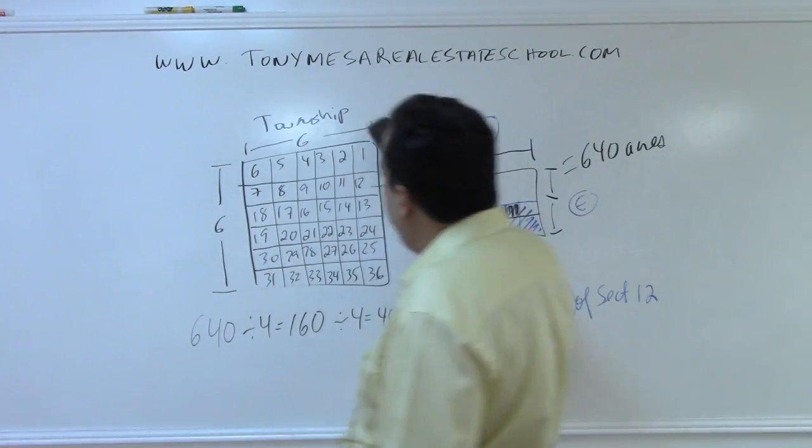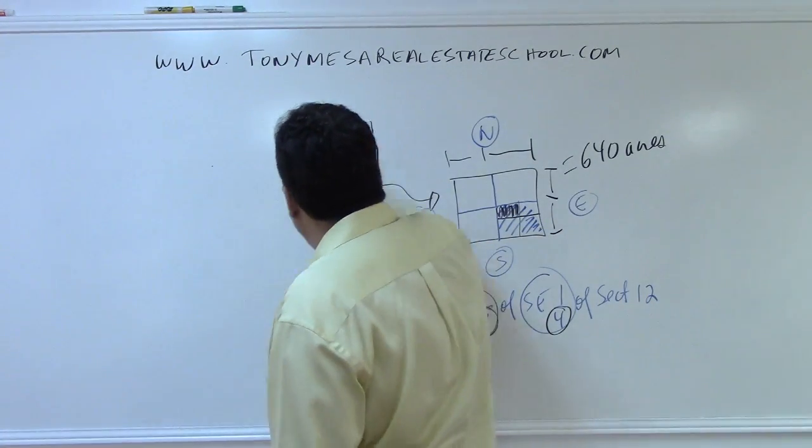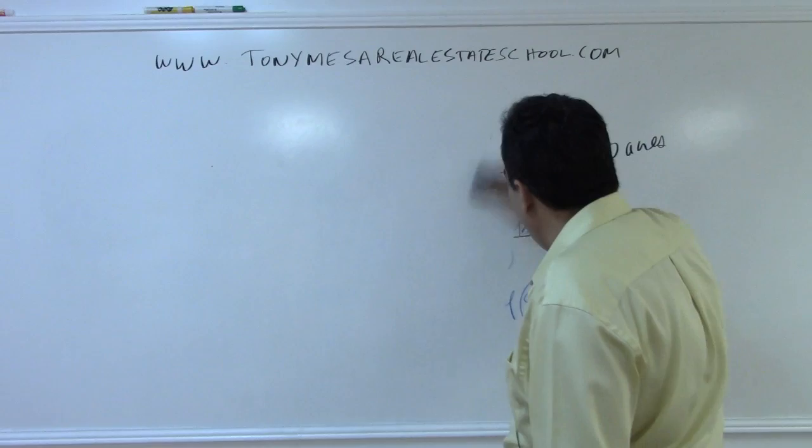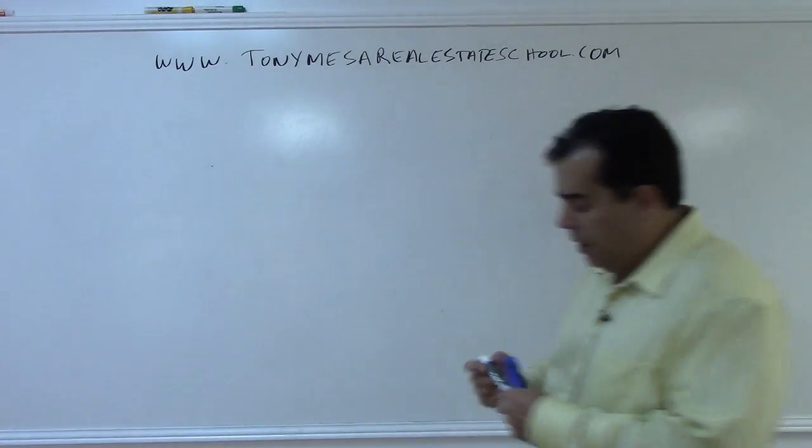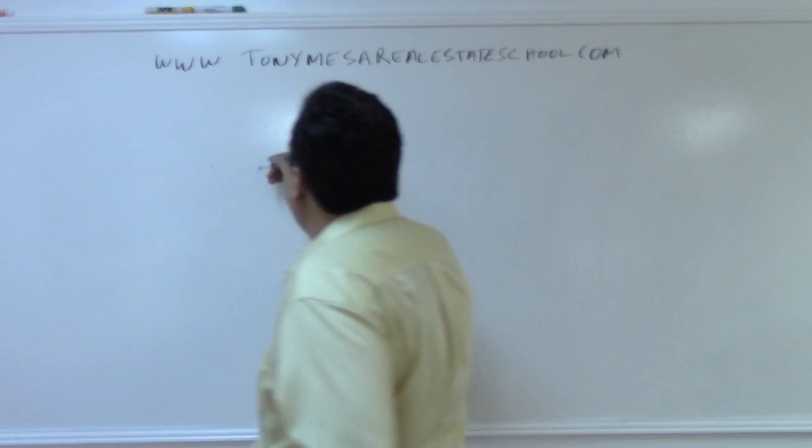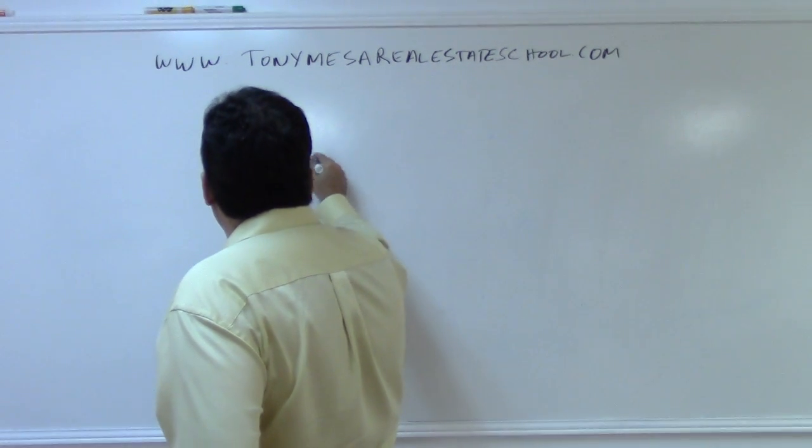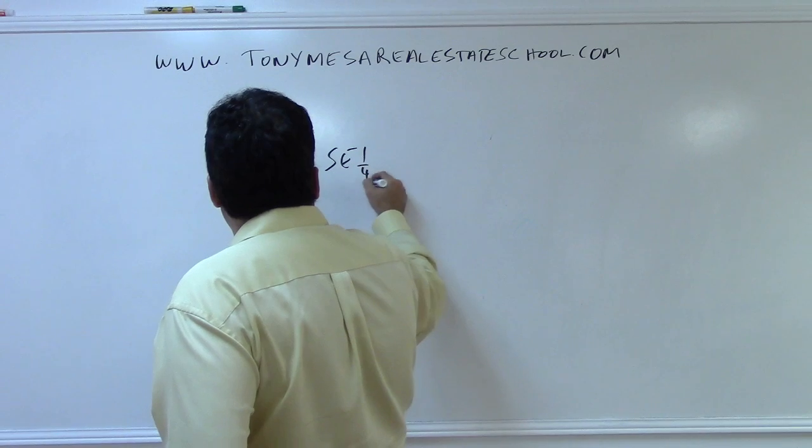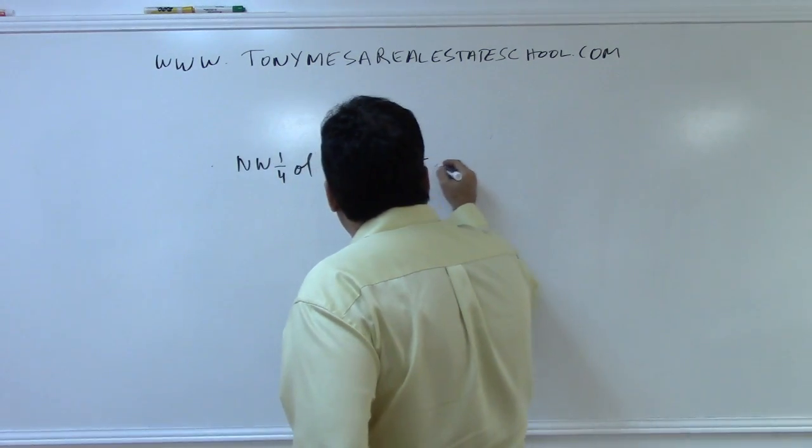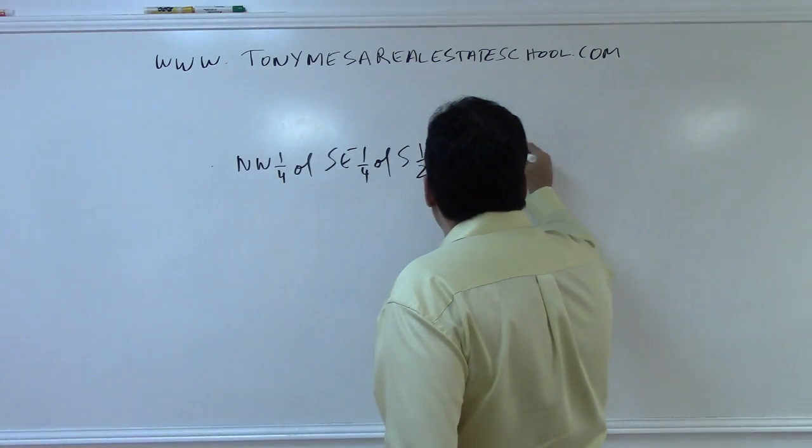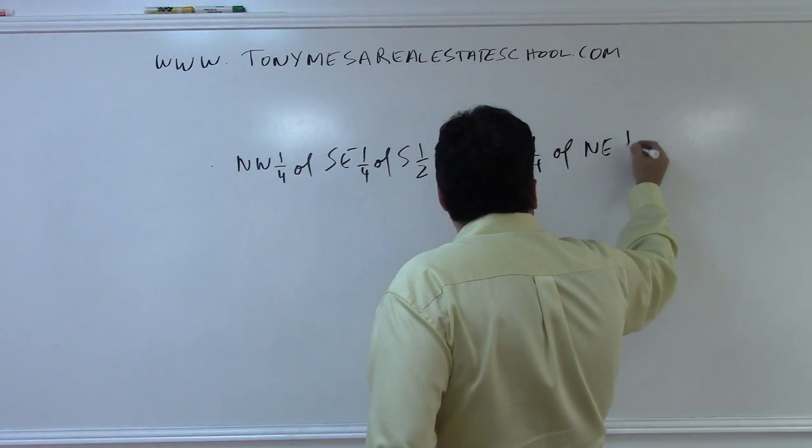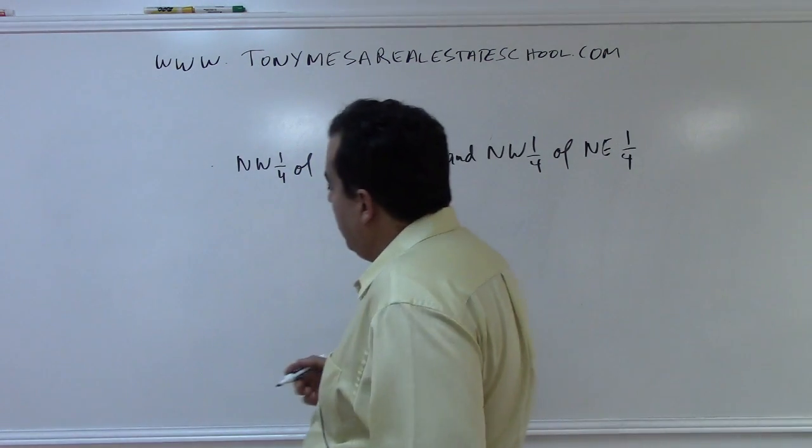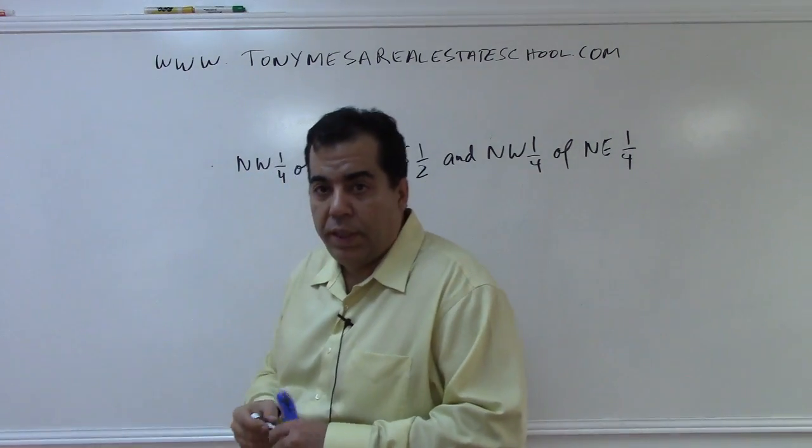So let's take a step, let's erase here, and let me give you a little bit of a longer one. So the idea is that if you have the northwest quarter of the southeast quarter of the south one half and the northwest quarter of the northeast quarter, and the question is how many acres total is that?